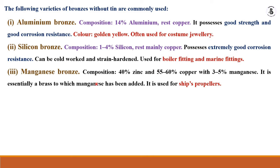Manganese bronze has 40% zinc, 55 to 60% copper, with 3 to 5% manganese. It has good properties.